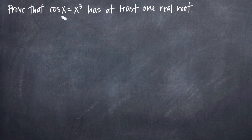Essentially, what we're being asked to show is that this equation has at least one point on the graph that crosses the x-axis, or put another way, where the value of this function is equal to 0.